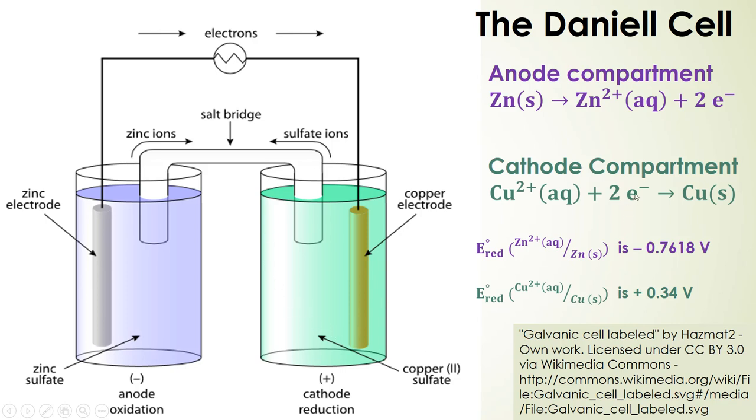That comes down to something called standard reduction potentials. I've written them both down here. You'll find them in a chart, and we'll discuss them in the next video. The reduction potential for the zinc 2+/zinc solid couple is -0.7618 volts. The standard reduction potential for copper 2+/copper solid is +0.34 volts. The cathode is always going to be the substance or element with the higher reduction potential. So the larger the number, or the less negative in some cases, that will be the cathode, and the other one will be the anode.